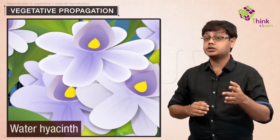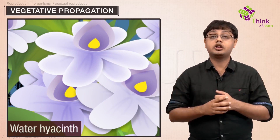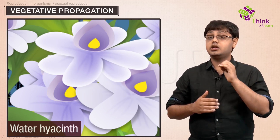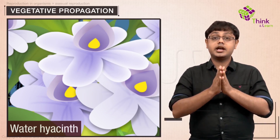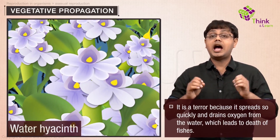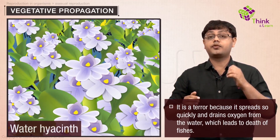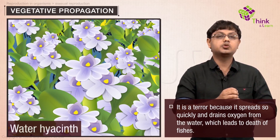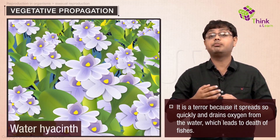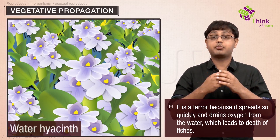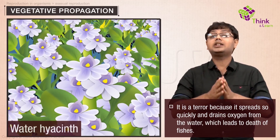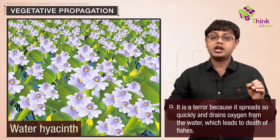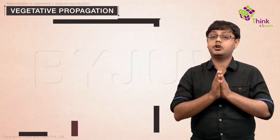Have you heard of this plant called water hyacinth? It is called Terror of Bengal. It is one of the most invasive weeds found growing wherever there is standing water. It is a terror because it spreads so quickly and also drains oxygen from the water, which leads to death of fishes. It was actually introduced in India because of its beautiful flowers and the shape of leaves. Since it can propagate vegetatively at a phenomenal rate and spread all over the water body in a short period of time, it is very difficult to get rid of them.